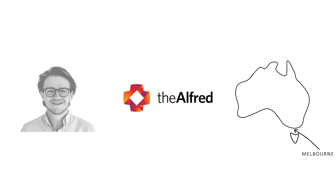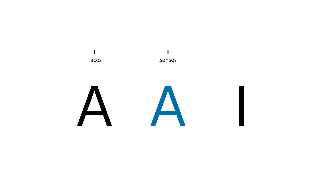Let's start by reviewing pacemaker modes. Pacemaker modes for temporary epicardial pacemakers typically have three letters. The first letter indicates the chamber that is paced, either the atria, the ventricles, or both. The second letter indicates the chamber that is sensed, either the atria, the ventricles, or both. The third letter indicates the response to pacing — that is, what happens when the pacemaker senses something.